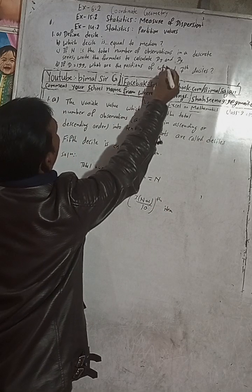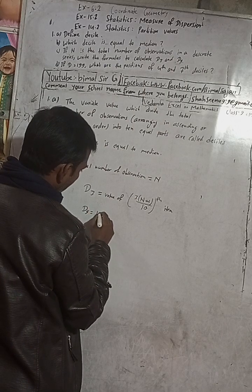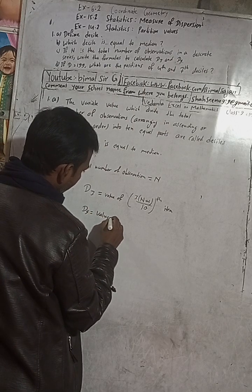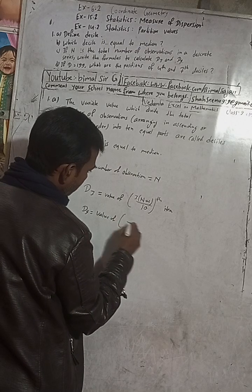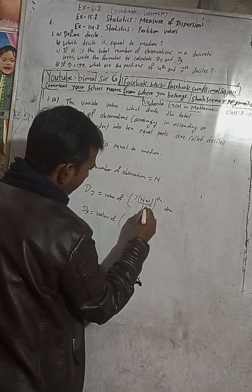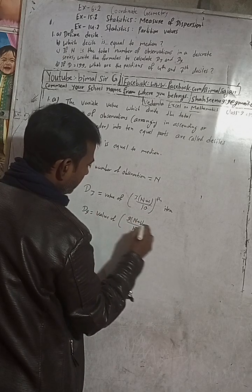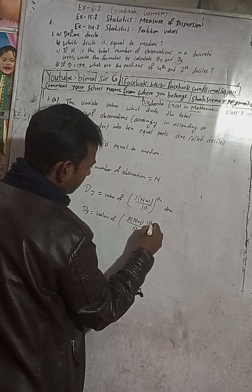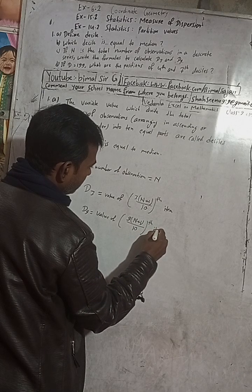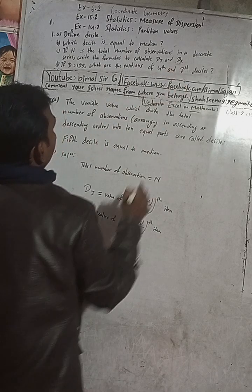So we got here D3 and D9. In the same way we got D3, now D9. This D9 is equal to again value of N plus 1 by 10, and there is 9, so multiply there with 9, and then TH item. So we got here D3 and D9.